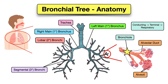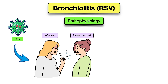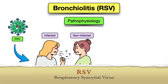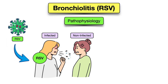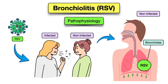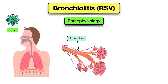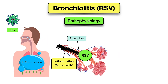Bronchiolitis is inflammation of the bronchioles, so inflammation is taking place in these tiny airways. Bronchiolitis is typically caused by a viral infection, and the most common virus is respiratory syncytial virus, or RSV. When an infected person coughs or sneezes, the virus spreads through respiratory droplets. It can also spread through close contact with an infected person or a contaminated surface. The virus enters through the eyes, nose, or mouth and travels down to the bronchioles, infecting airway epithelial cells and causing inflammation — as represented by the black line in the bronchioles.